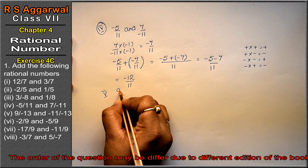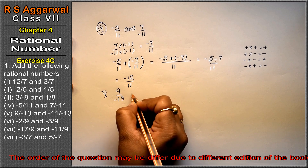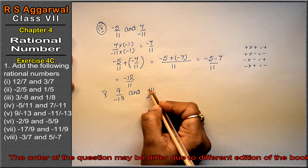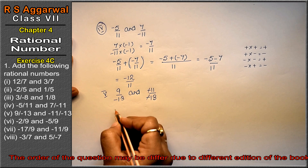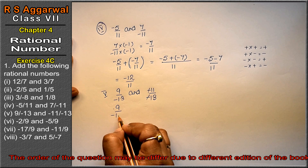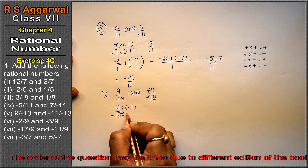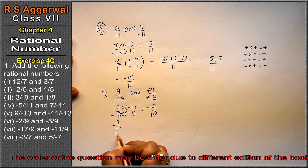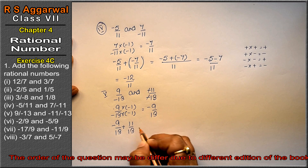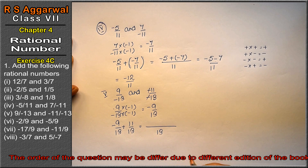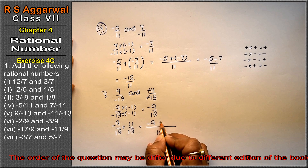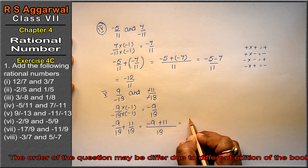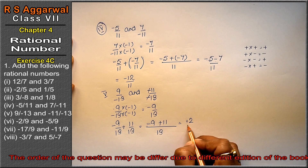5th part is 9 upon minus 13 and minus 11 upon minus 13. Here, minus minus cancels, so minus 11 upon minus 13 becomes 11 upon 13. And 9 upon minus 13: multiply by minus 1 top and bottom to get minus 9 upon 13. So: minus 9 upon 13 plus 11 upon 13. Denominator same, so 13. Opposite signs: 11 minus 9 = 2. Sign of the larger (11) is plus, so 2 upon 13 is the answer.